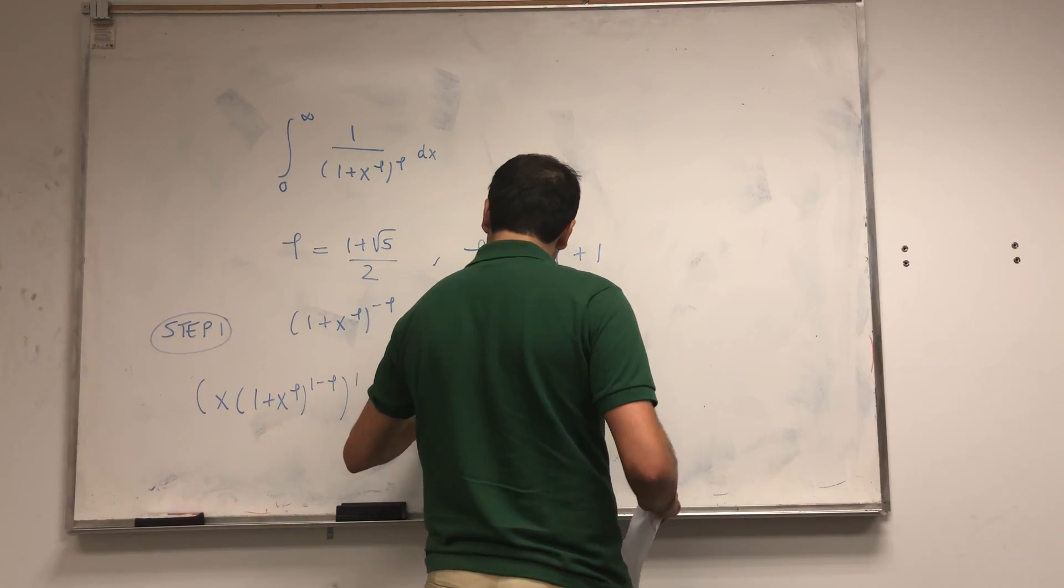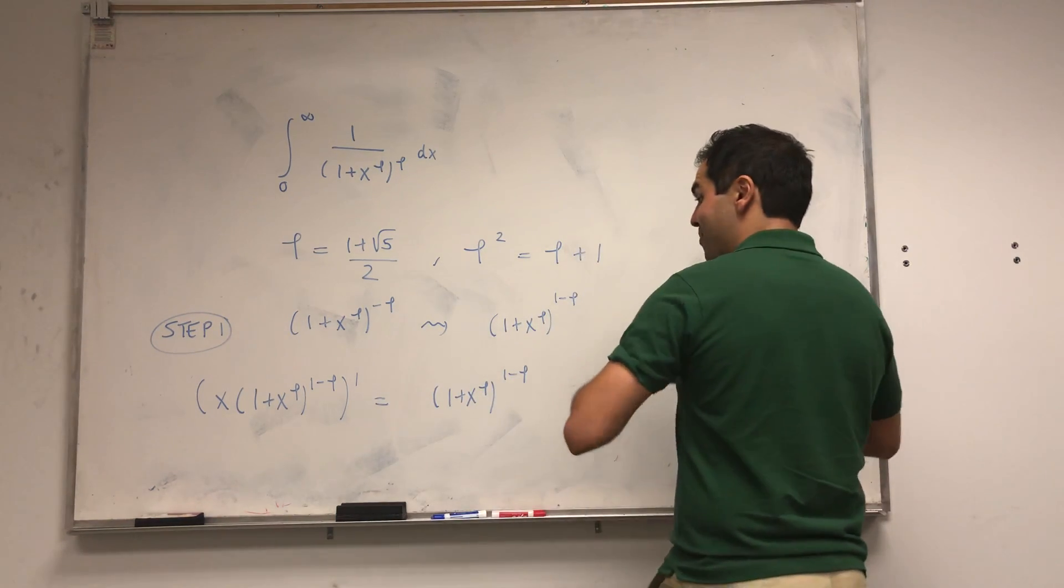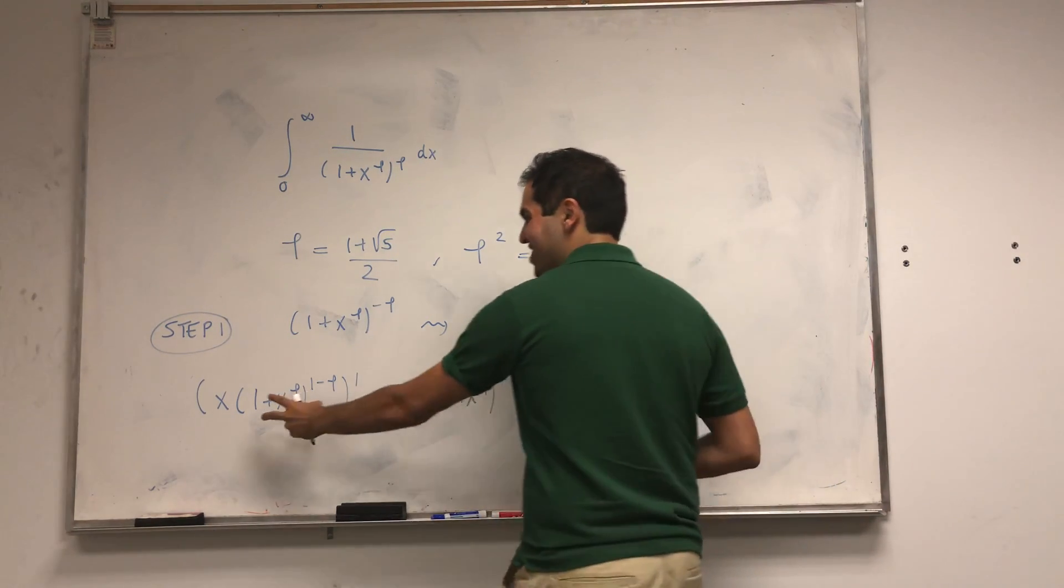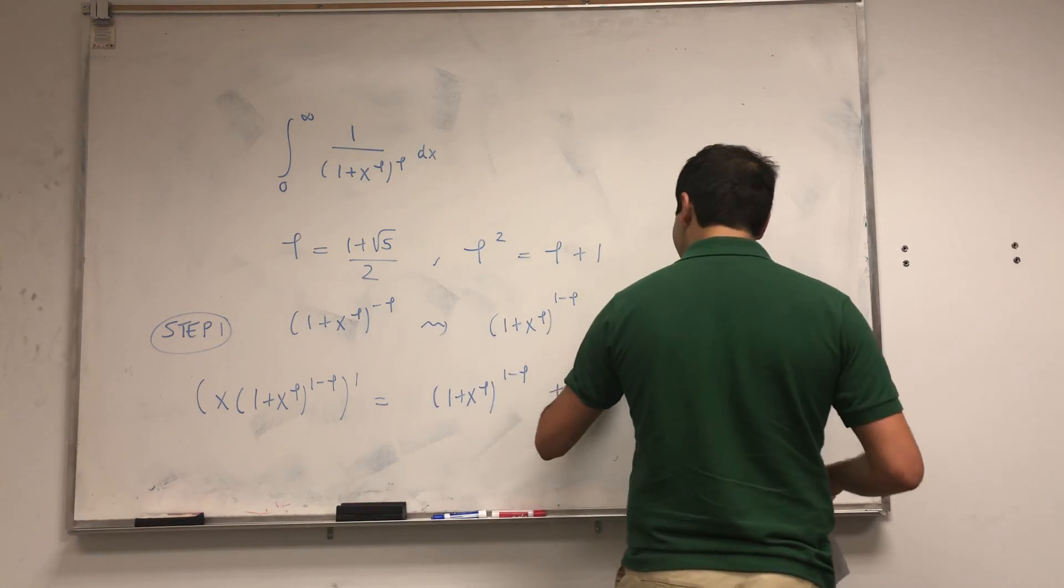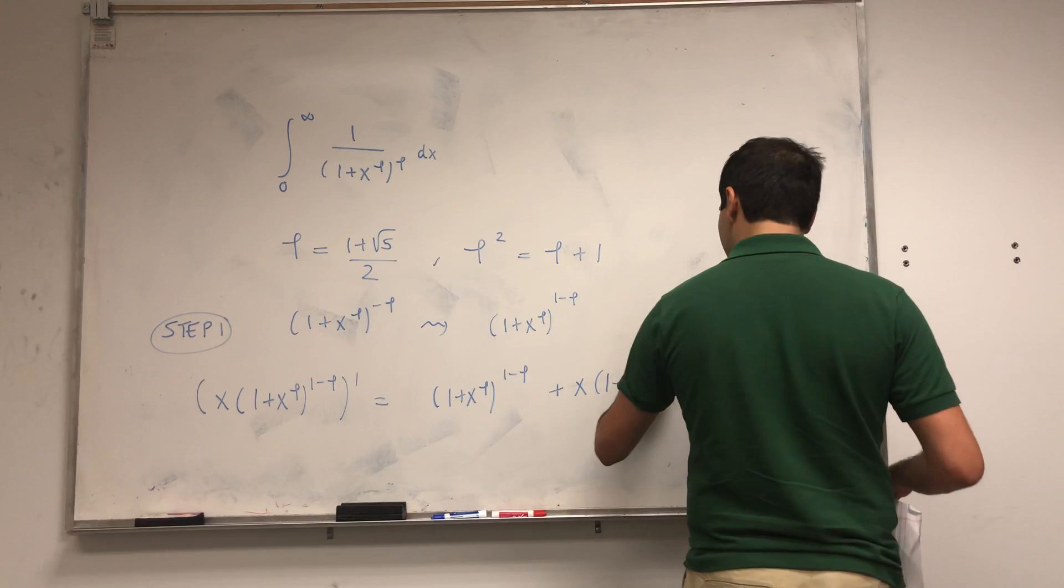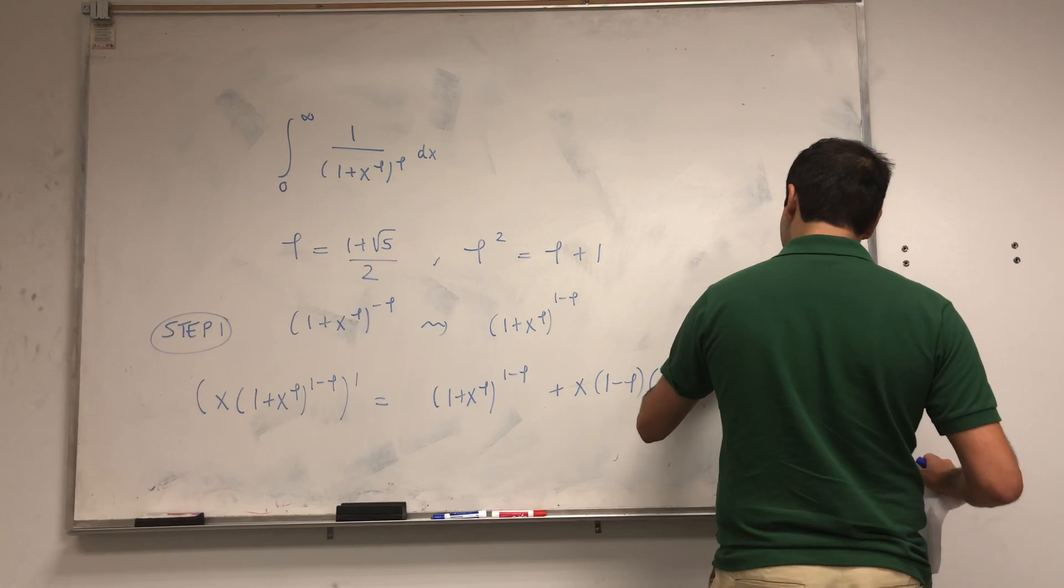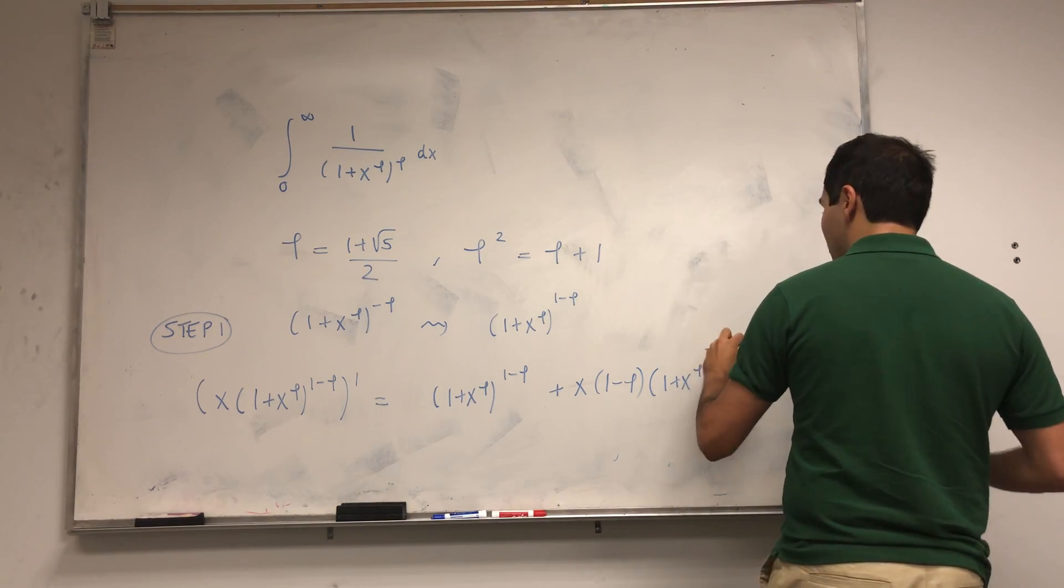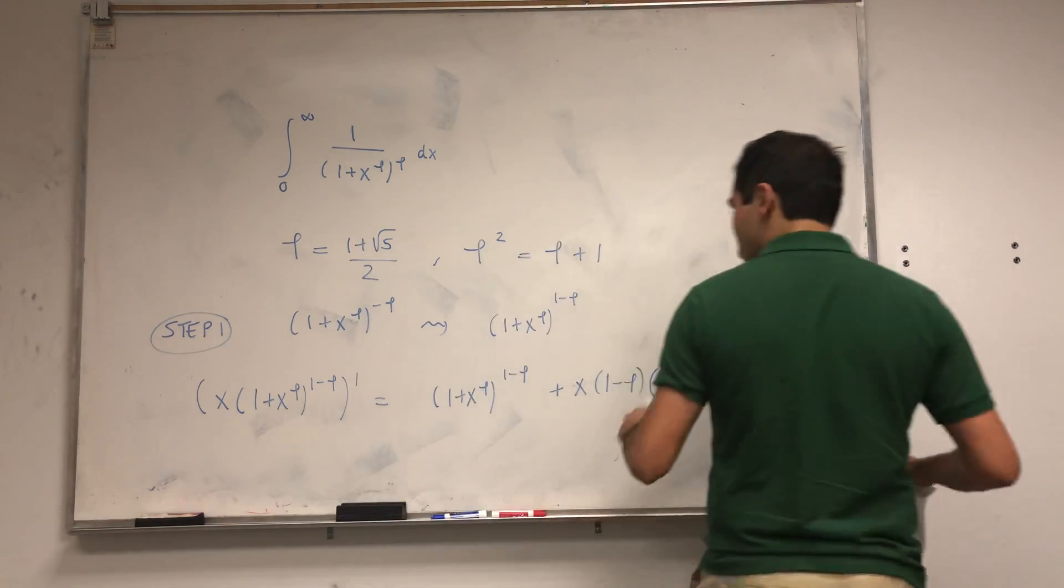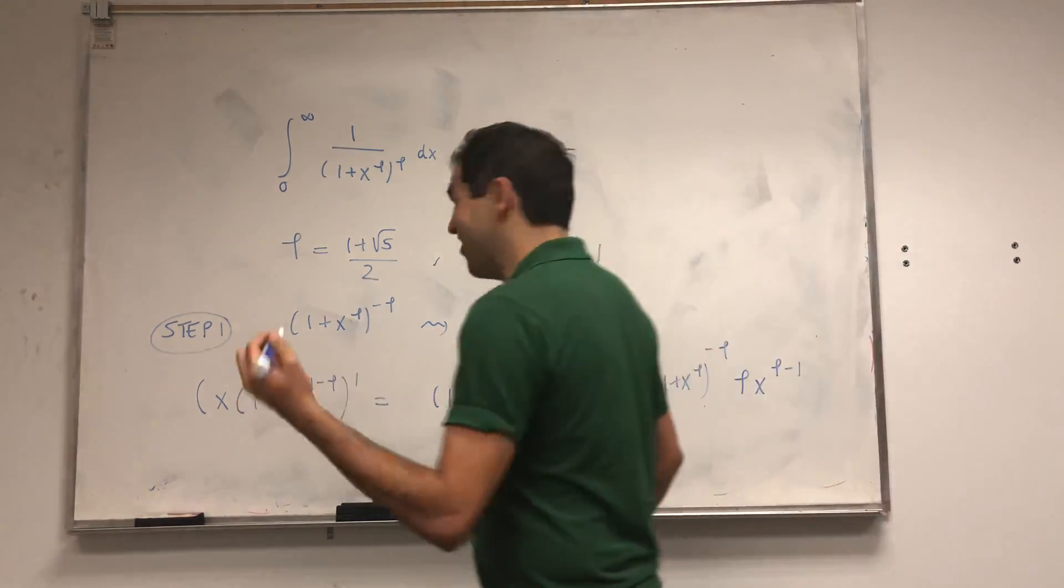The derivative gives us (1 + x^phi)^(1-phi) plus x times the derivative of this. Of course you have a chain rule, so you differentiate the outside: (1-phi) times (1 + x^phi). The price you pay is 1, so you subtract 1 from the exponent.